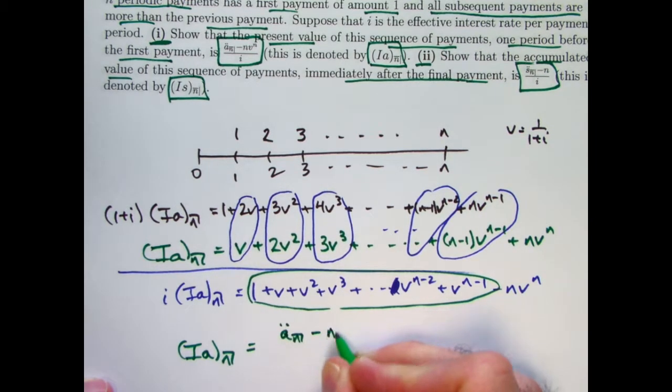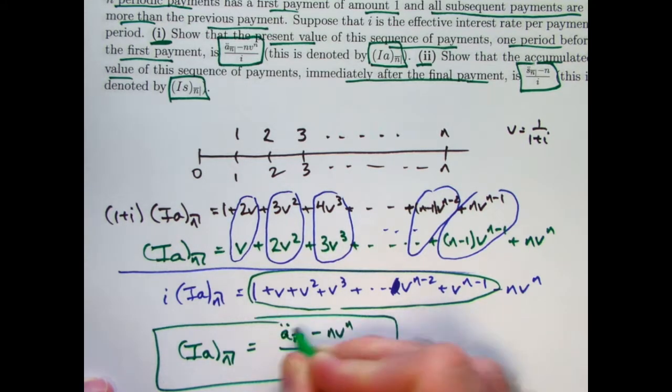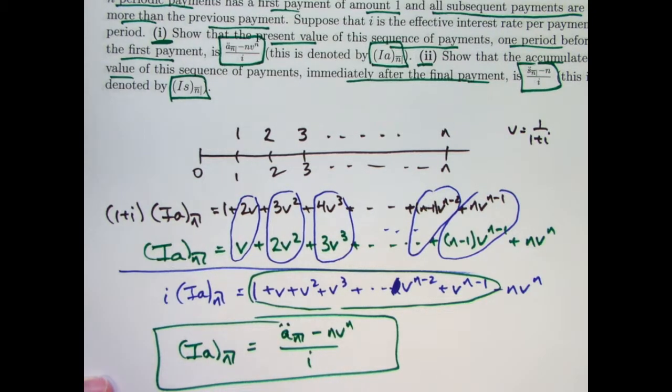It's got n payments of 1 that are being discounted, and the present value is being found immediately right before that first payment, which actually means it's an annuity due, not an annuity immediate. Its present value is a_n double dot. And we also have the minus nv to the n, and we divide it by i. So we have derived this formula for (Ia)_n, the present value of an increasing annuity immediate, where the payments are 1, 2, 3, etc., with n payments and the last payment being n.